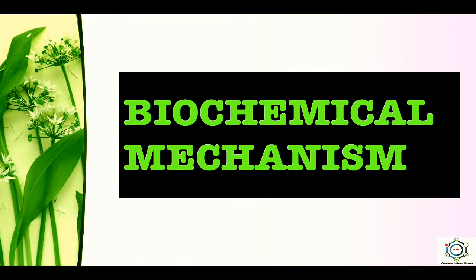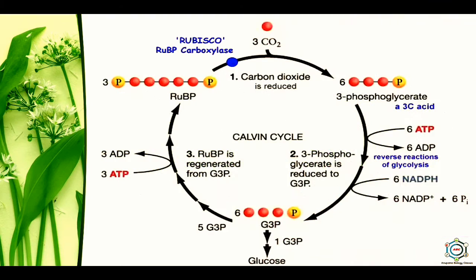Now let's see the biochemical mechanism of photorespiration. Before discussing it, let us look at the first step of the C3 cycle in detail. This is the reaction where RUBP (ribulose 1,5-bisphosphate) combines with carbon dioxide to form two molecules of 3-phosphoglyceric acid in the presence of enzyme rubisco. The enzyme rubisco has the remarkable property of fixing not only carbon dioxide but also oxygen, hence the name RUBP carboxylase oxygenase. However, the enzyme has a much greater affinity for carbon dioxide than for oxygen.